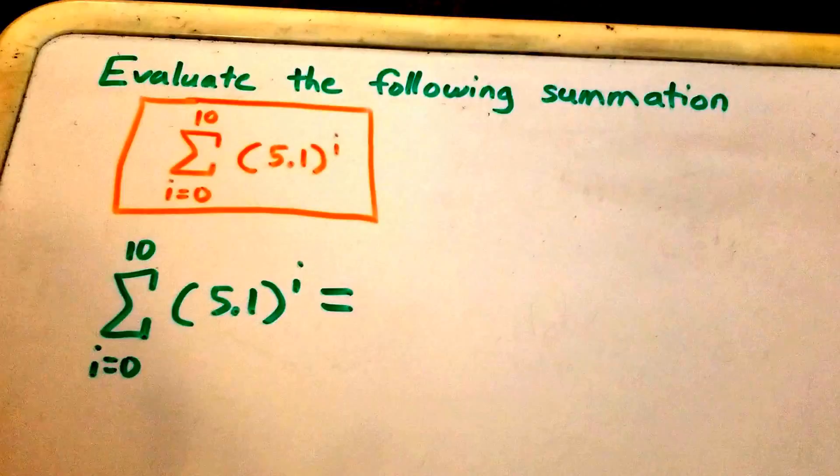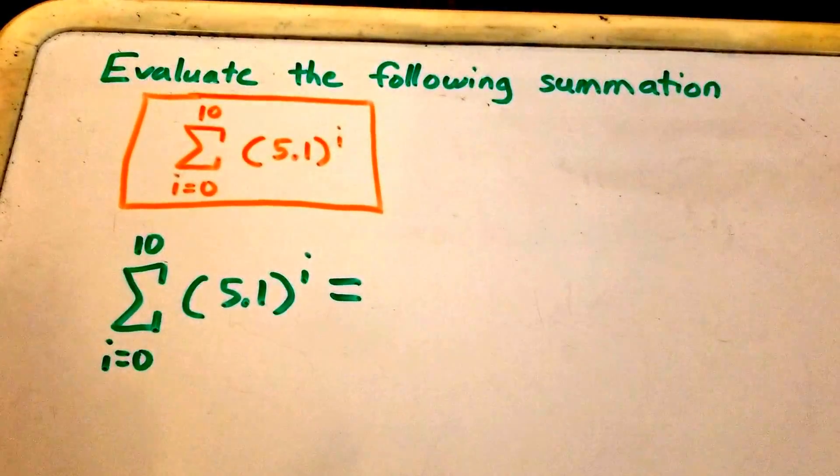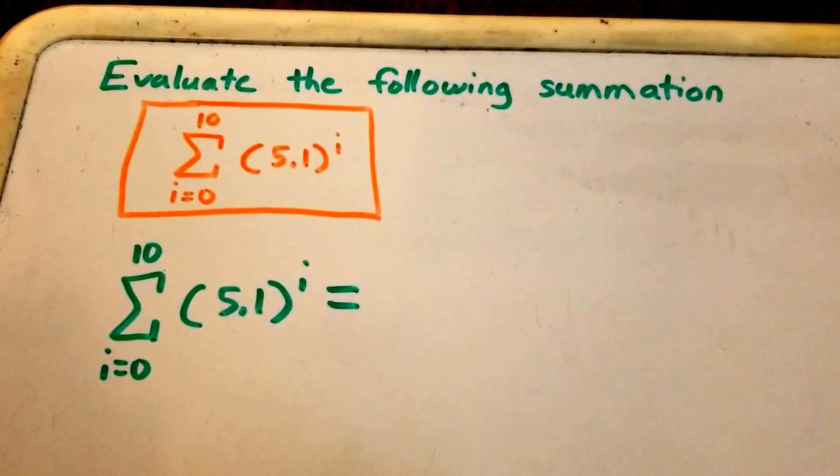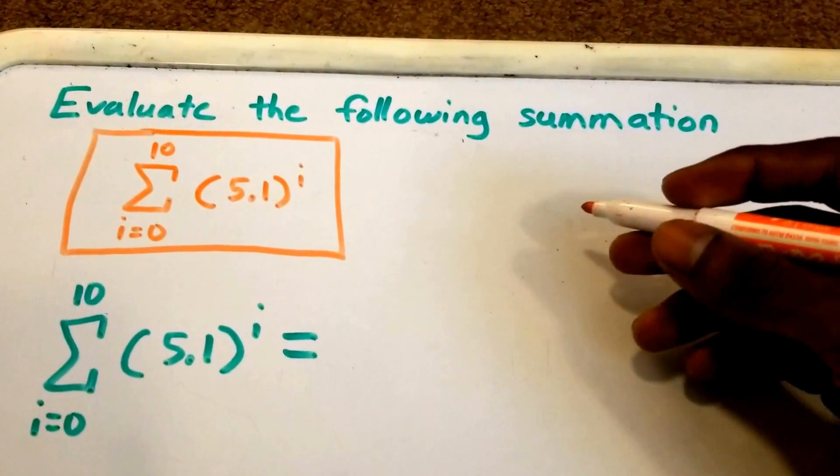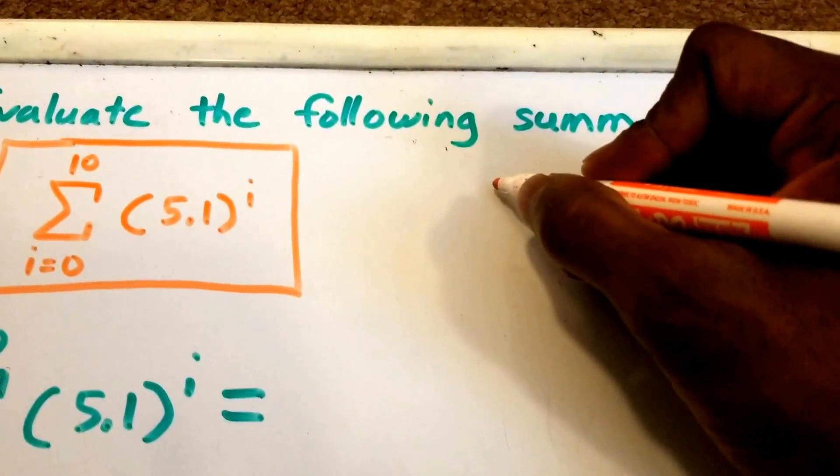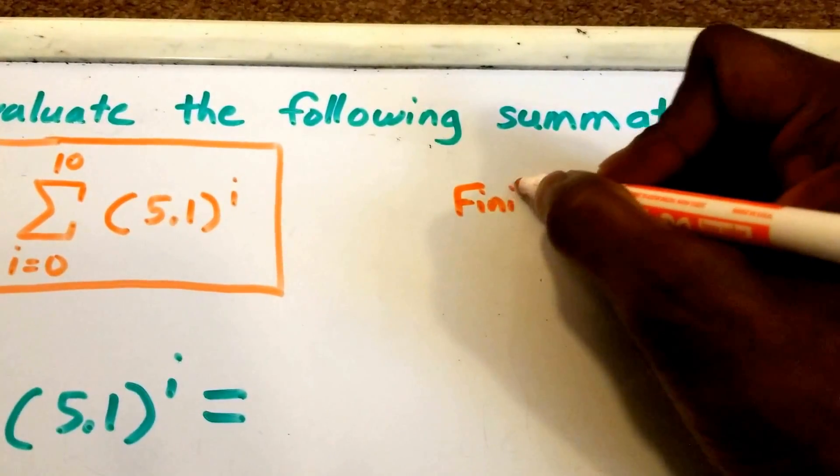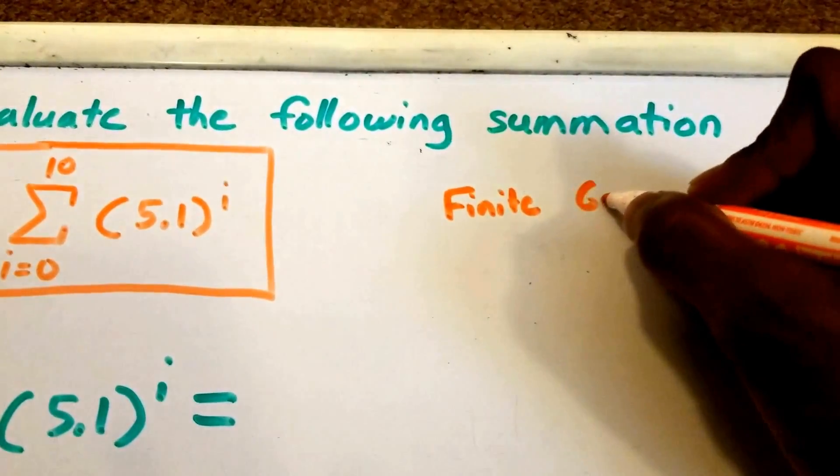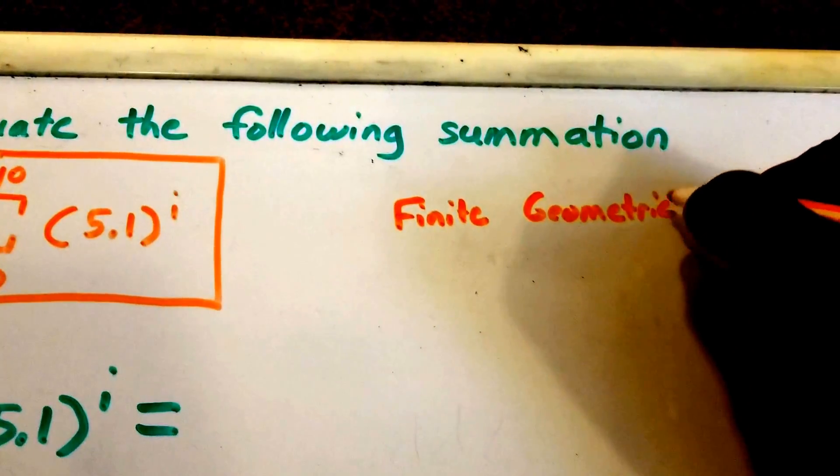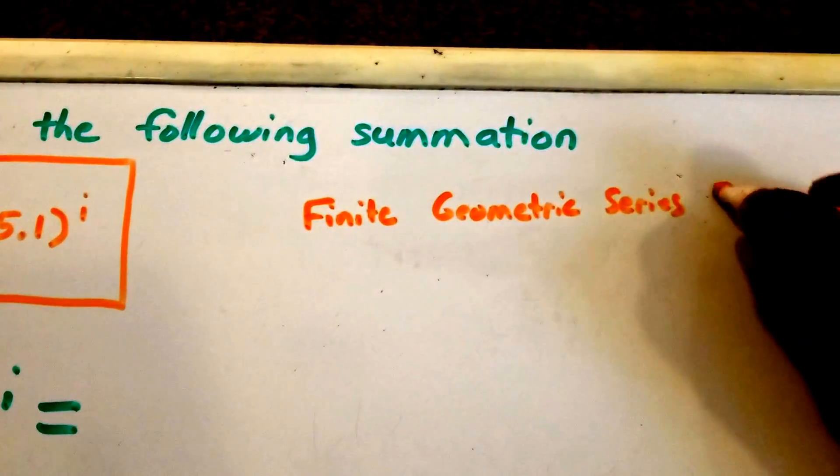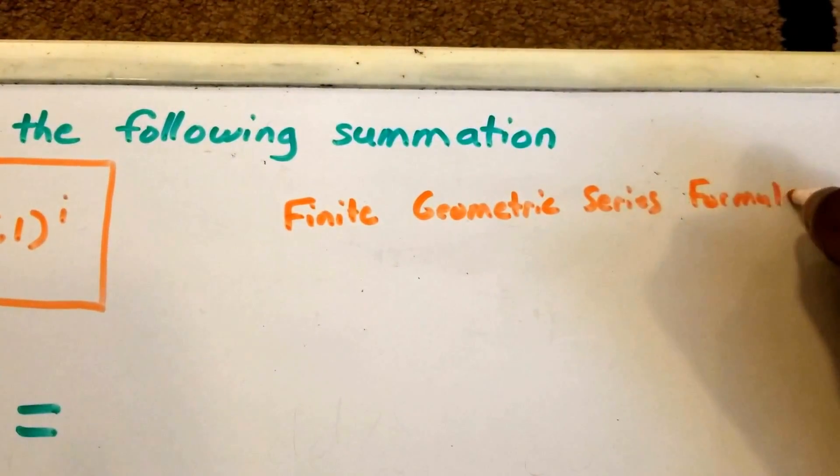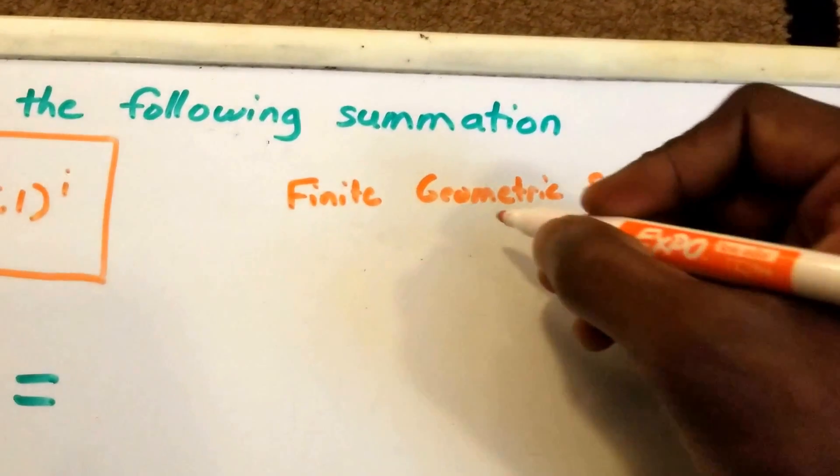The formula we're going to be using is the finite geometric series formula. It states that we have a summation in this form: a summation that runs from i equals 0 to n of r^i.